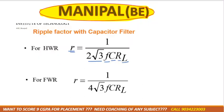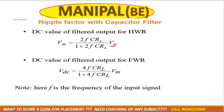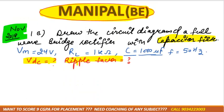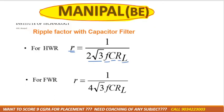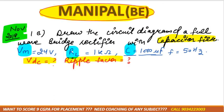You need to learn this formula because it is not mentioned in your handbook. This covers the ripple factor for half wave and full wave, and the VDC for half wave and full wave. You simply need the values for frequency (f), RL, capacitor (C), and the peak voltage. Substitute these into the formula and you will get the answer.